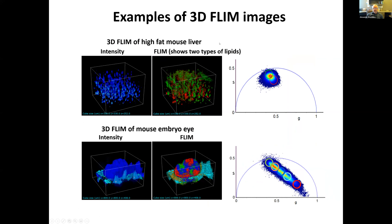As I said, the DIVER microscope is also equipped with FLIM imaging capability. We can do fluorescence lifetime imaging and reconstruct samples in 3D at pretty high depth. Pure intensity images don't show much, but using FLIM analysis we can color features according to their lifetime. For example, in a mouse embryo eye, we can highlight many different structural features by lifetime.